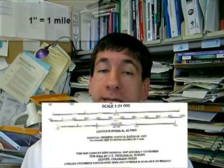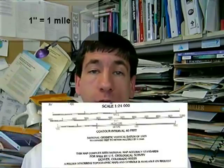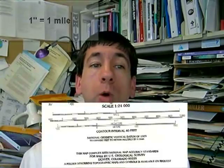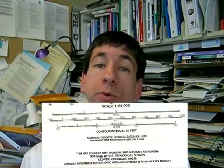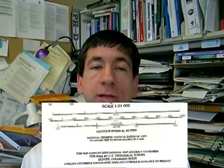Cartographic scale can be expressed as a verbal statement, such as '1 inch equals 1 mile,' or graphically in a scale bar, or as a representative fraction, such as 1-to-24,000 scale, which is the scale of a standard USGS topographic map.